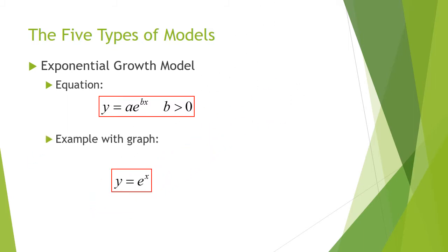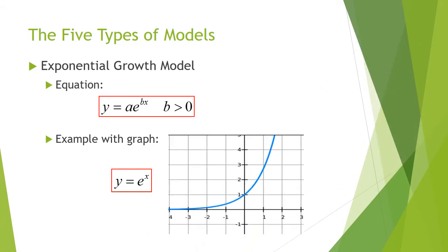Here's an example. y equals e to the x is the most basic one you can have, and this is what it looks like. Notice with exponential growth, the growth starts off slow, but increases in speed as time goes on. Also note that the graph has one horizontal asymptote at y equals zero.